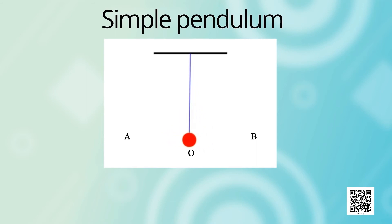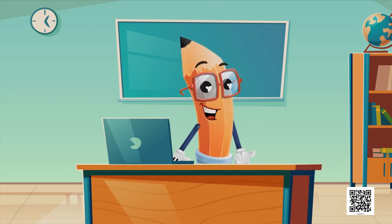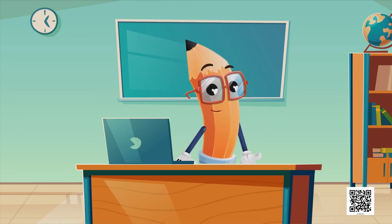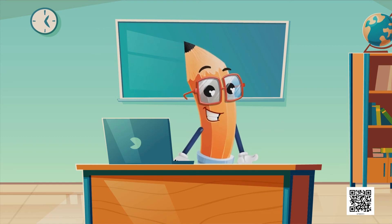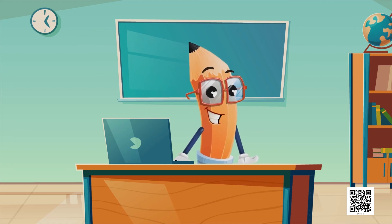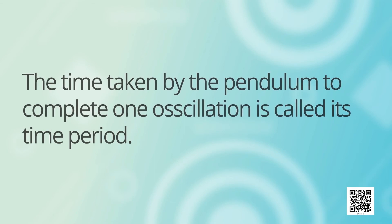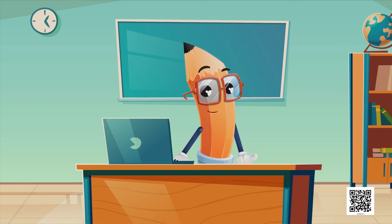The to and fro motion of a simple pendulum is an example of periodic or an oscillatory motion. The pendulum is said to have completed one oscillation when its bob moves from one extreme position to the other extreme position and comes back to the first point. So the time taken by the pendulum to complete one oscillation is called its time period.